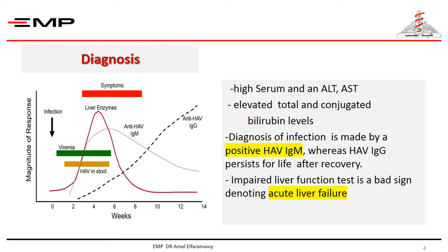Shedding of hepatitis A virus in stools is greatest during one to two weeks before the appearance of symptoms to about one week after the appearance of symptoms, and this is considered the period of infectivity.